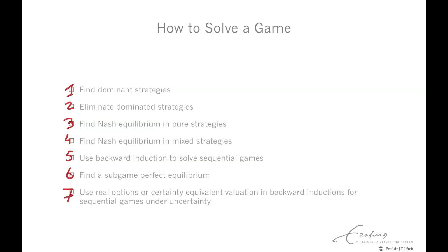Seventh, we add to these rules of solving the game in game theory the real options valuation. We use real options valuation — uncertainty equivalent valuation — in the backward induction process for sequential games under uncertainty. When we use this real options valuation, we appropriately adjust for risk along the branches of the tree of the game.